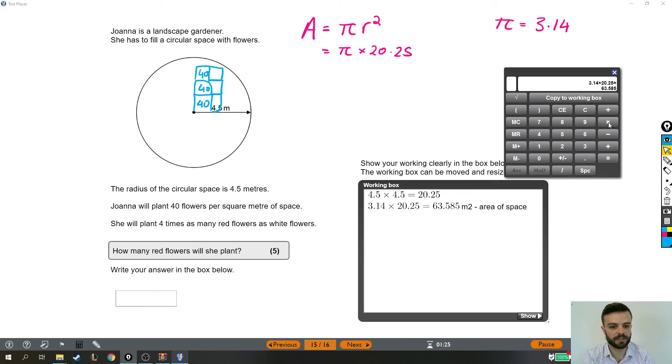So next I'm going to take that number and multiply by 40. And the answer is this, 2543. So quite a lot of flowers. I'm just going to make sure my cursor is in the right place and then put that in the working box. That is the total flowers.